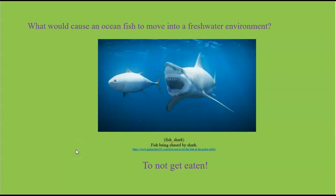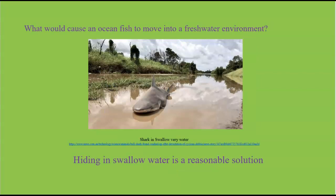What would be a good reason for an ocean fish to move into freshwater? One of the most obvious is to not get eaten. The ocean is deep, but most freshwater streams are very shallow. A big shark just hasn't got the room required to maneuver. So hiding in shallow water is a reasonable answer.